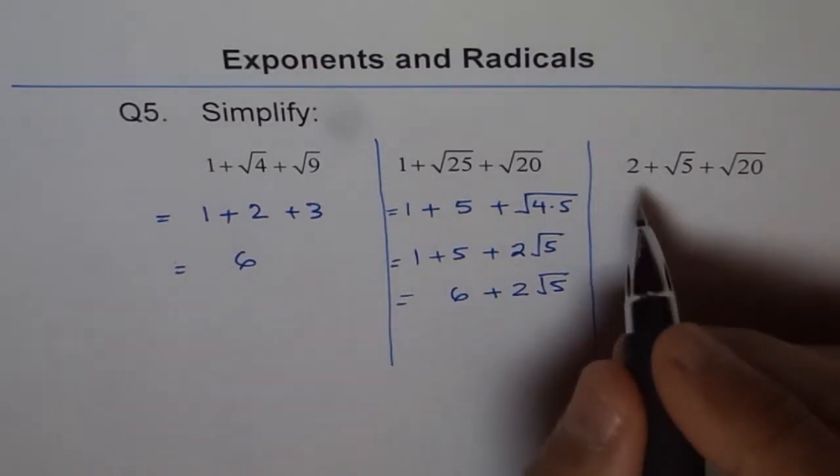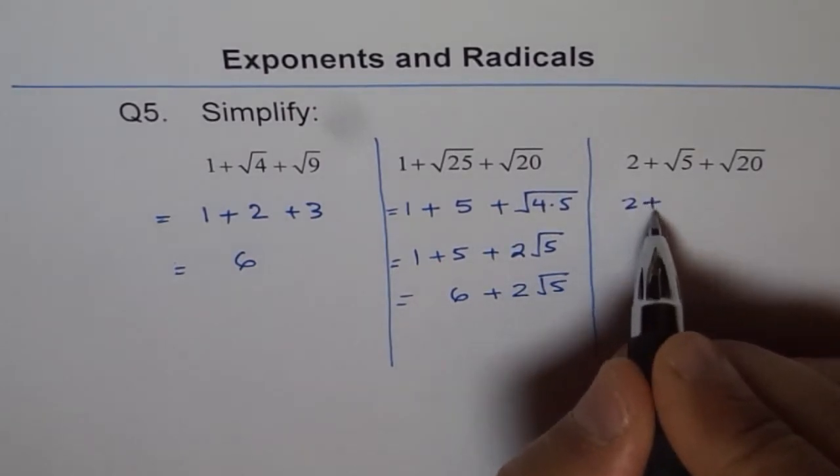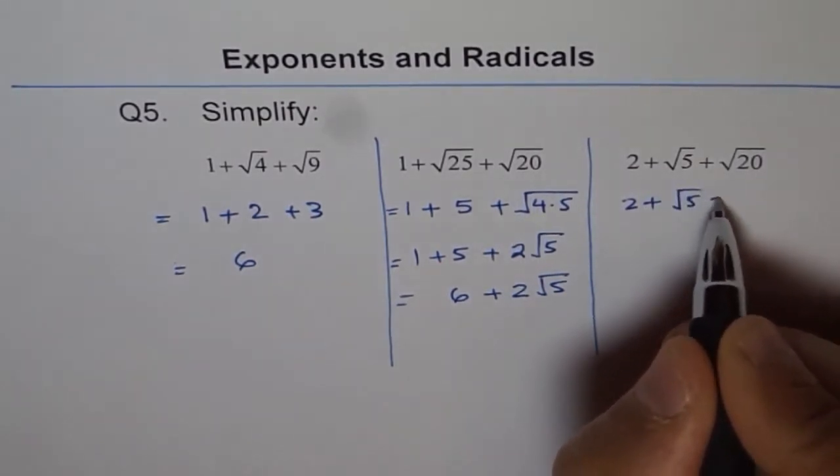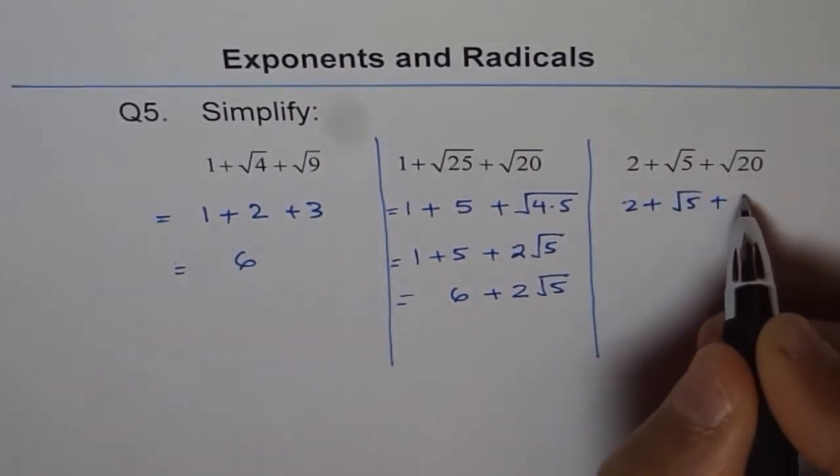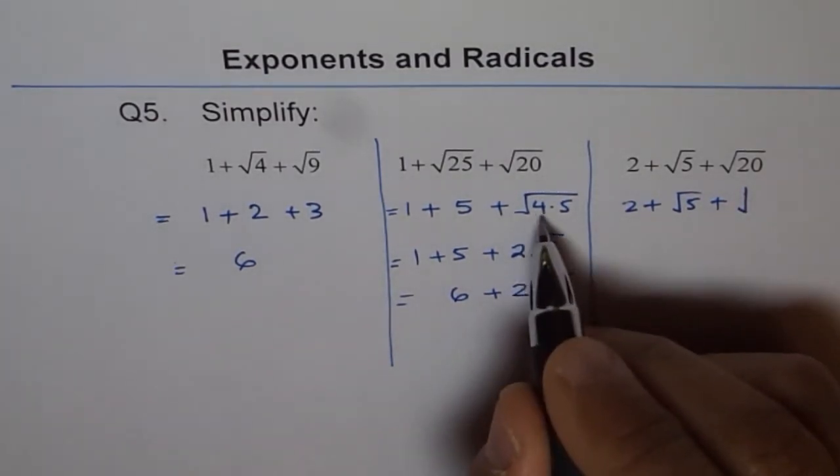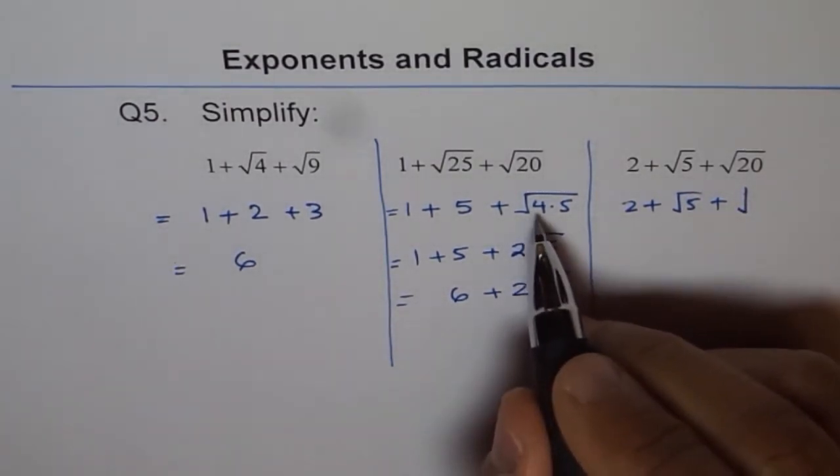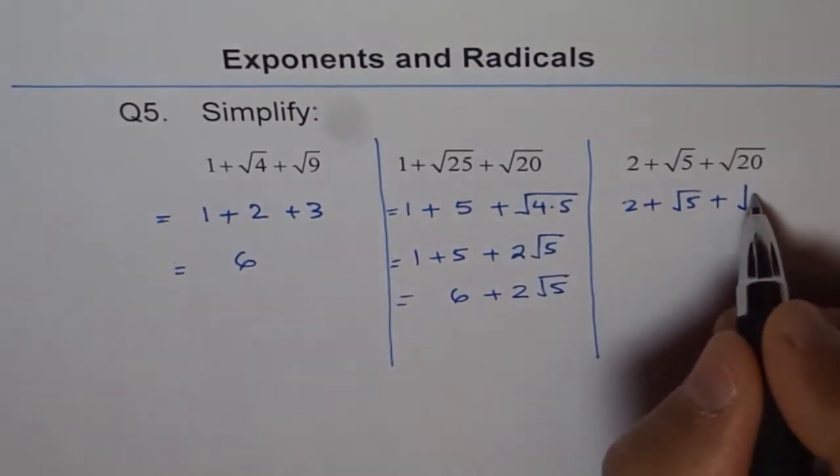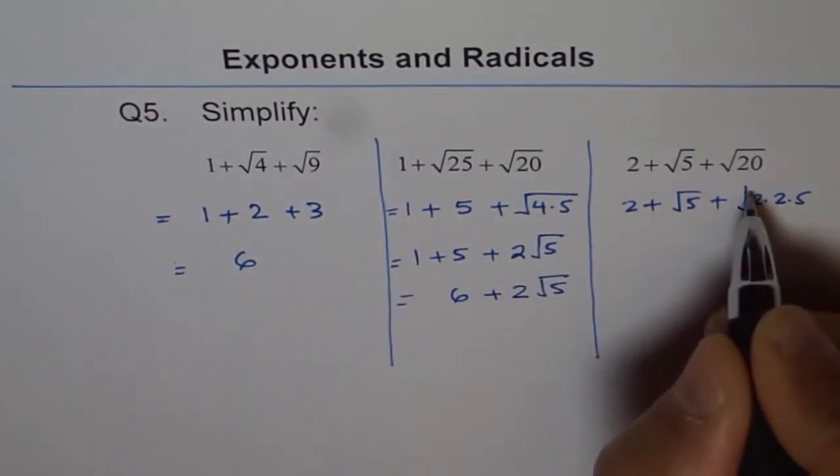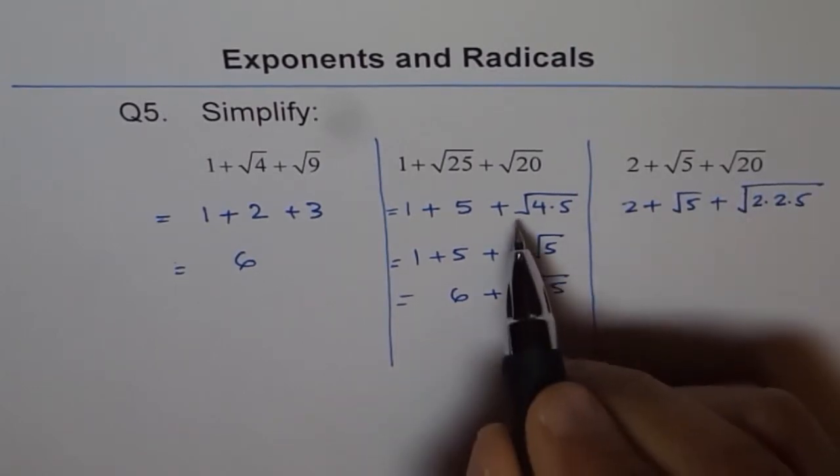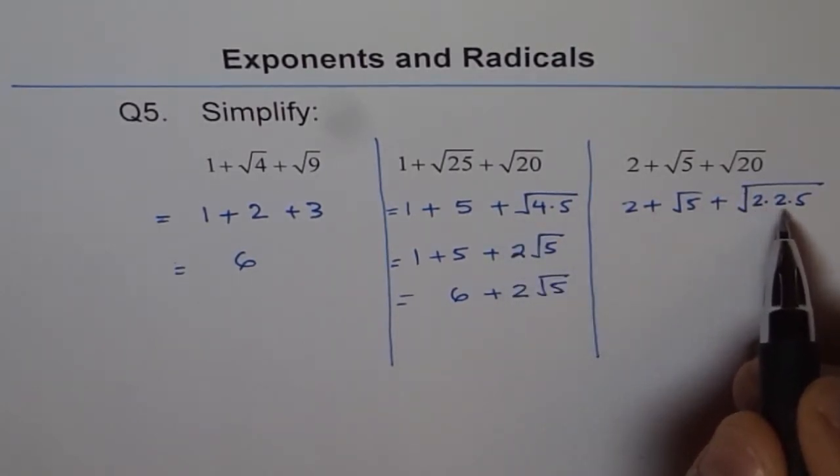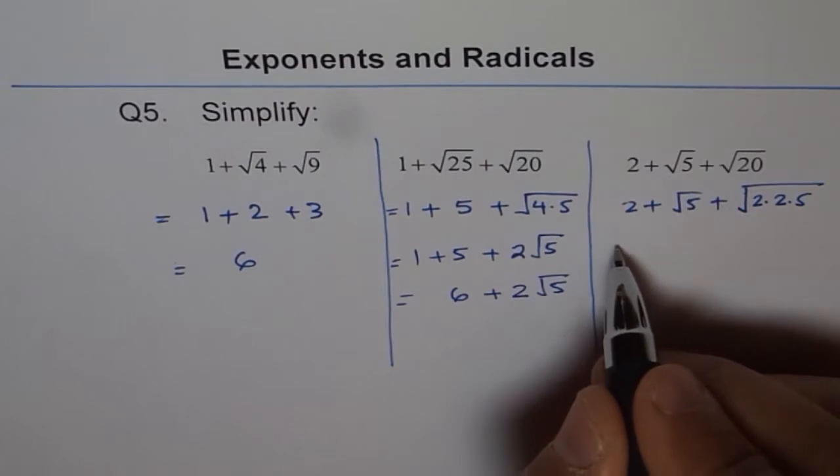Now let's do the next one: 2 plus square root 5 plus 20. So 20 can be written as 4 times 5. Why am I writing 4 times 5? Because 4 is a perfect square. So I could write this like 2 times 2 is 4. That is why I am writing 4 times 5. 4 is a perfect square, square of 2. So I can simplify this.